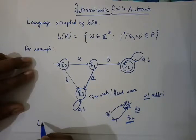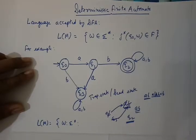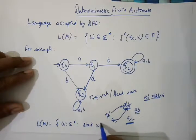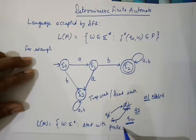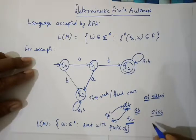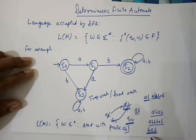We can generalize the language accepted by this DFA: it accepts all strings W belonging to sigma star such that W starts with prefix AB. So ABAB is also accepted, ABBAB is also accepted, but BAB is not accepted. This is the generalized language accepted by this DFA.